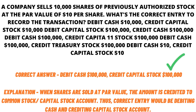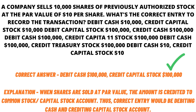The correct answer is debit cash with $100,000 and credit capital with $100,000. The explanation is that when shares are sold at par value, the amount is credited to common stock or the capital stock account. Thus the correct entry would be debiting cash and crediting the capital stock account.